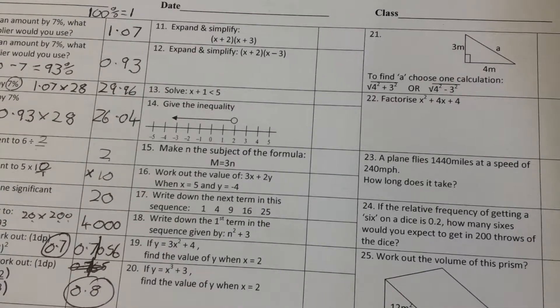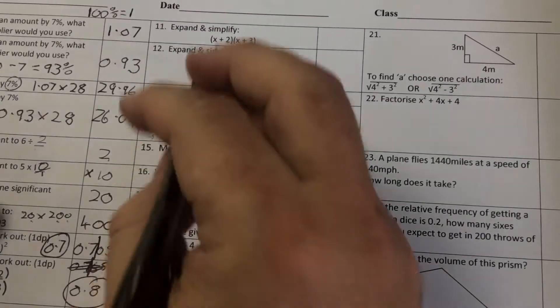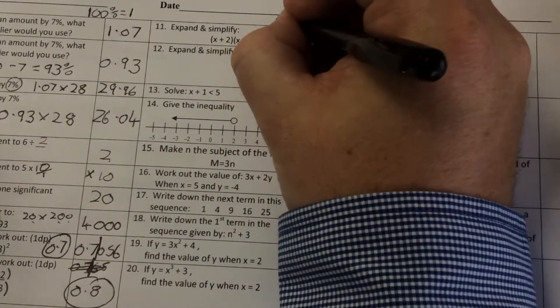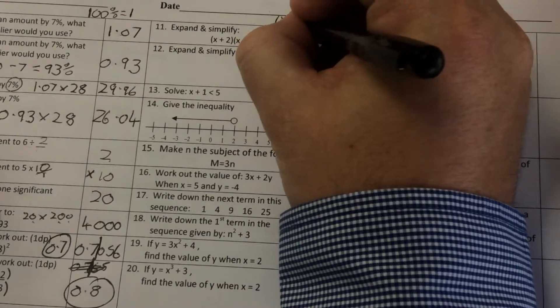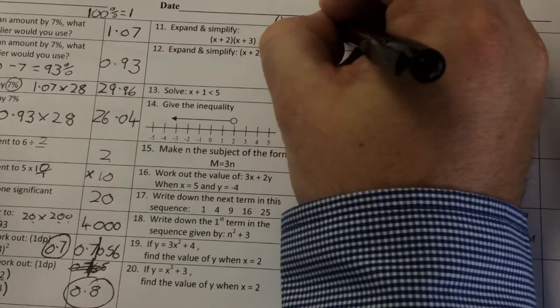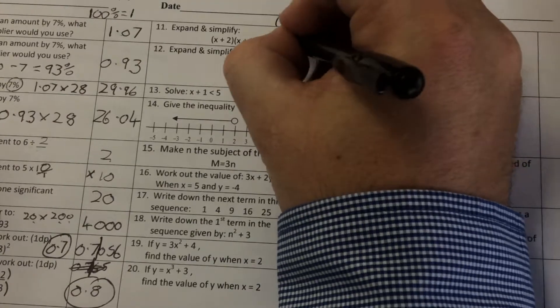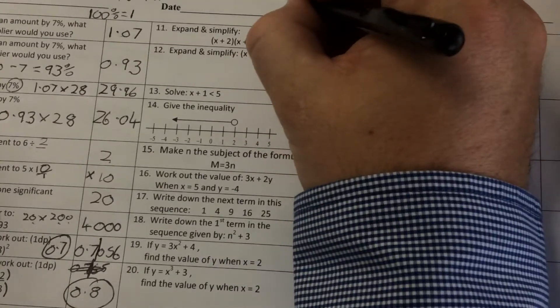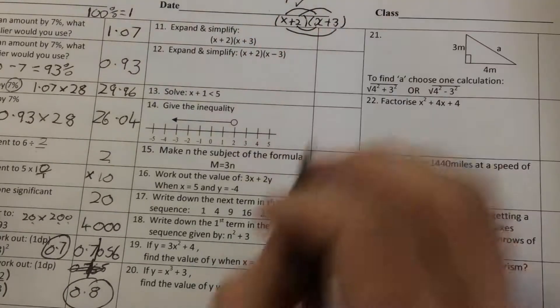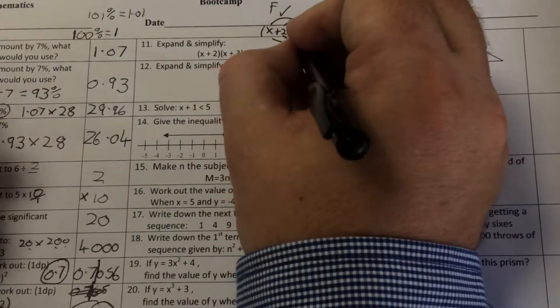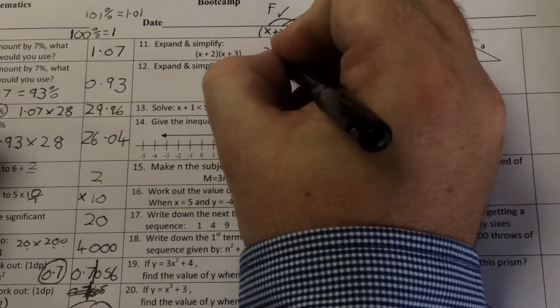Expand and simplify. When I'm expanding and simplifying this, it's a double bracket. Most of you would have done this by using FOIL. So we'd have split it up as x plus 2 and x plus 3. And then I'd have done a smiley face above it. And I'd have remembered to do the first bracket, that one first. So by FOIL, the first one, x times x is x squared.